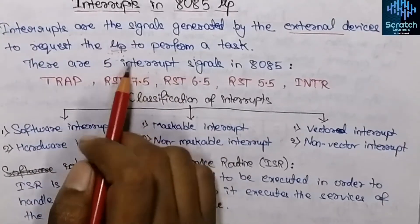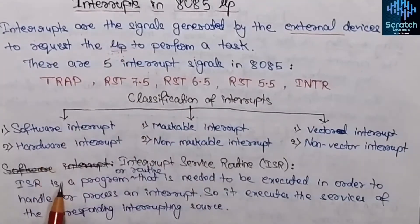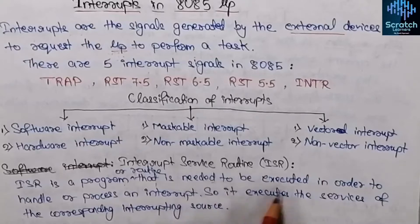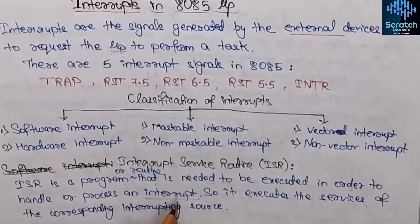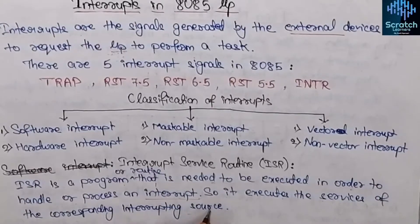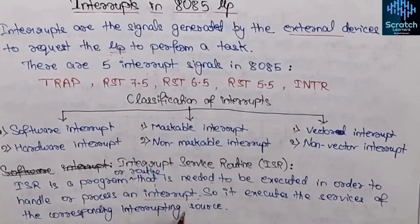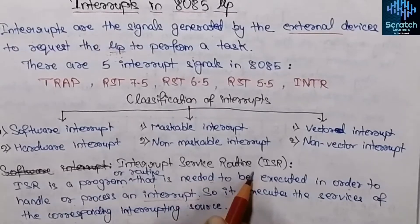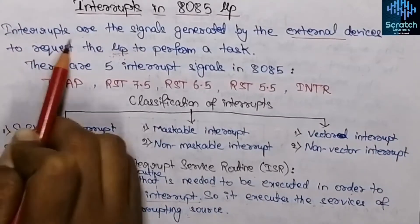When the microprocessor suspends the currently executing program, control jumps to the ISR — that means the Interrupt Service Routine. This is a program or routine that needs to be executed in order to handle or process an interrupt. It executes the services of the corresponding interrupting source. There is a specific ISR for each corresponding interrupt, and for a specific interrupt its corresponding ISR is executed.